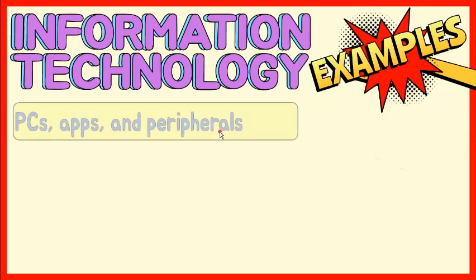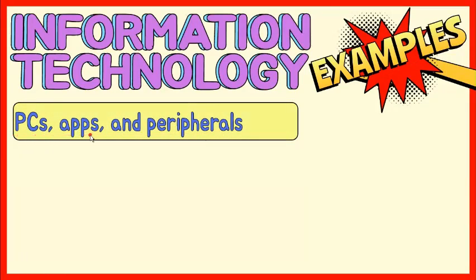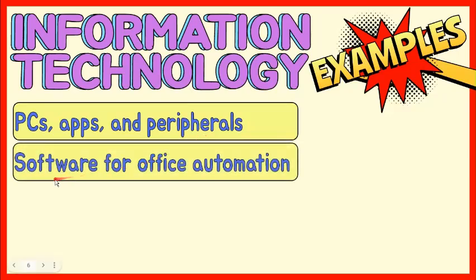Personal computers and their traditional applications, including data storage and programs to input, process, and output the data. Peripherals directly connected to computer systems that are used to collect or transmit audio, video, or graphic information, such as scanners and digitizers. Software and support for office automation systems such as word processing and spreadsheets, as well as the computers to run them.